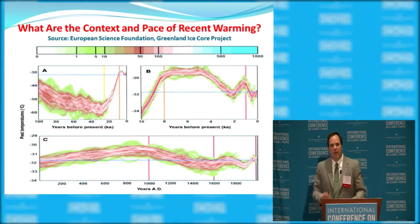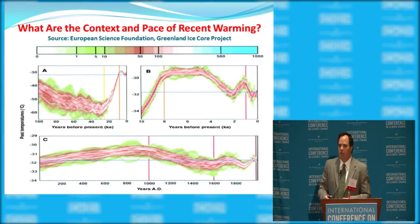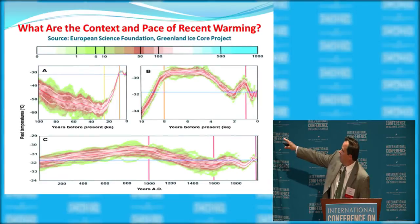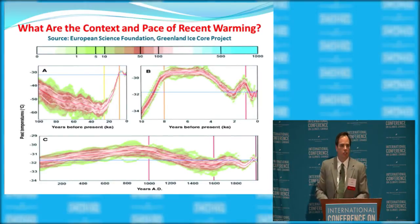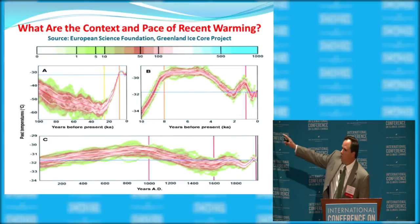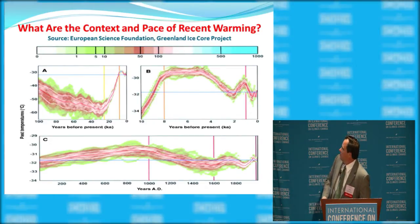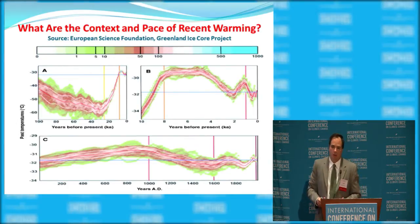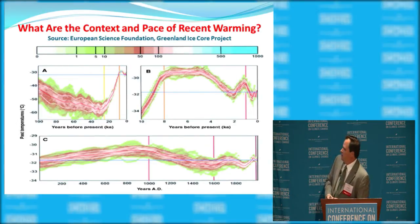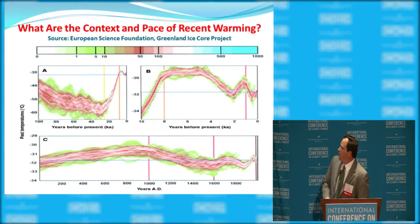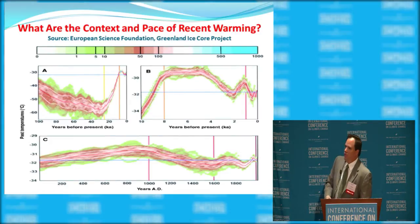Alarmists often talk about these being the hottest decade or years in history because they want to define history as only the past 100 or so years, which coincides with the depths of the Little Ice Age. They want you to forget that while human civilization developed and flourished, temperatures were substantially warmer than today. We'd have to continue warming at the current pace for a few centuries before reaching the temperatures that dominated over the past several thousand years. These data are provided by the European Science Foundation's Greenland Ice Cores project — objective data.